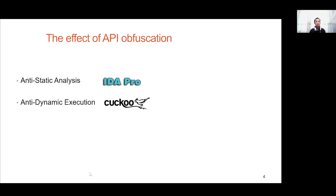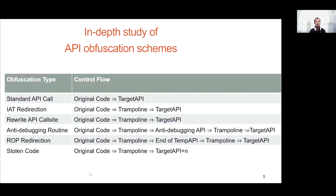To deal with API obfuscation, we conducted an in-depth study of API obfuscation schemes and found five kinds of schemes in total. This finding can serve as a baseline to test API de-obfuscation approaches.